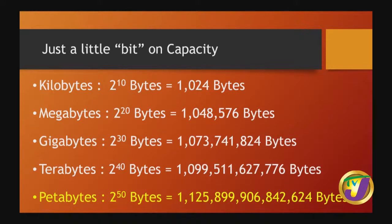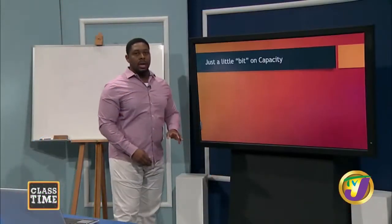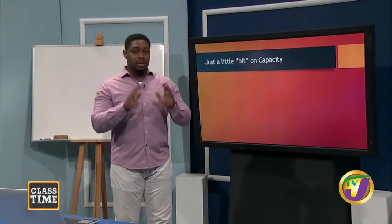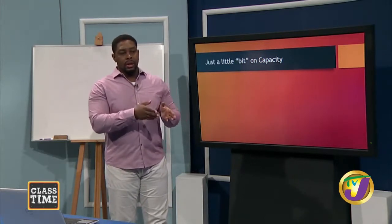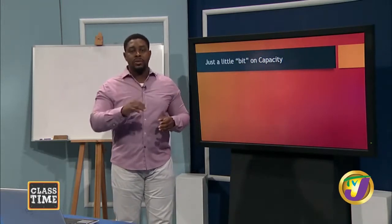Beyond terabytes we have petabytes — 2 to the 50 — which is 1,099,099,906,842,624 bytes. As you can see, approximations leave off a substantial amount of storage. That's why I urge you to use the indices — 2 to the 10, 2 to the 20, etc. — especially when doing calculations, since even one megabyte has 48,576 bytes that you'd be disregarding.